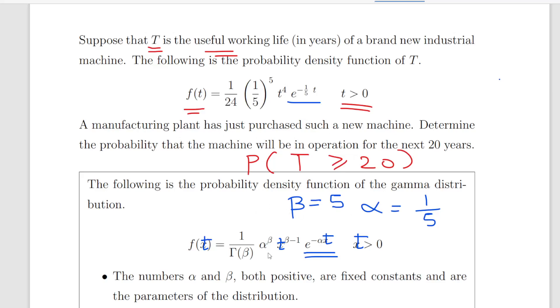And the gamma function of 5 is 4 factorial, and that's 1 over 24, so this would work out to be 1/24. So it is consistent. We're going to use this formulation with alpha equal to 1/5 and beta equal to 5.